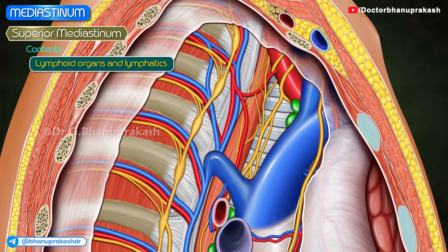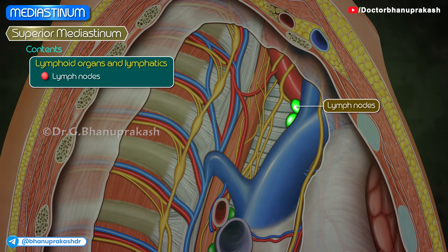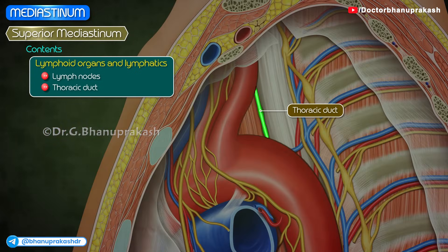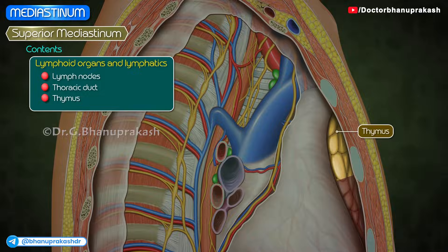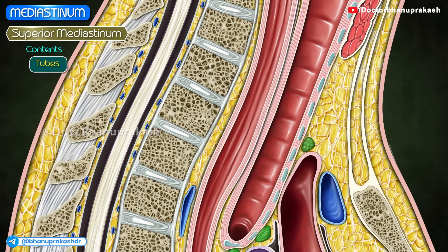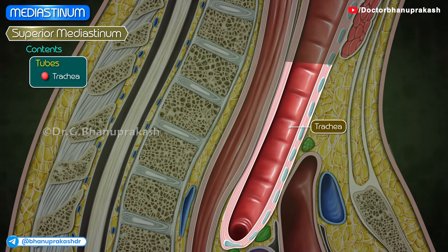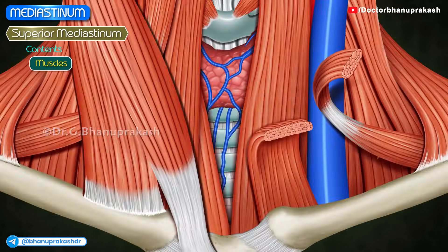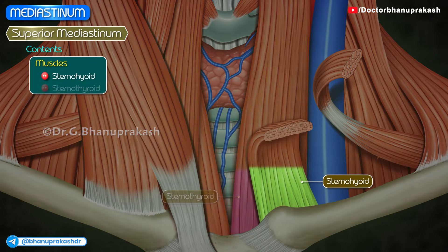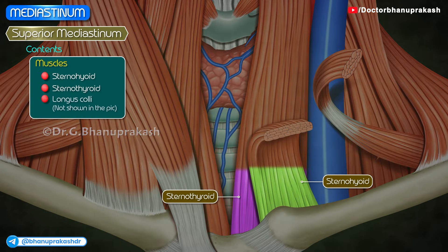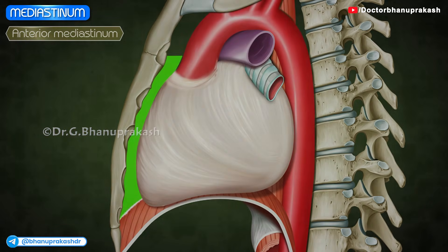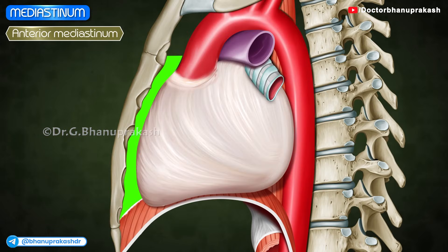Lymphoid organs and lymphatics: lymph nodes, the thoracic duct, and the thymus. Tubes: the trachea and esophagus. Muscles: the sternohyoid, sternothyroid, and the longus colli.